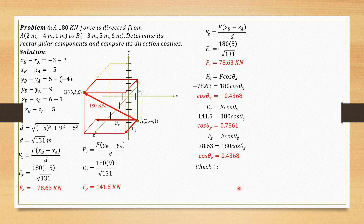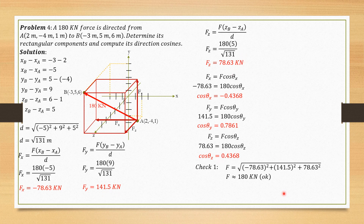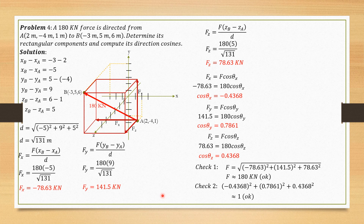To check our work using method 1: the square root of (-78.63)² + (141.5)² + (78.63)² is approximately equal to 180, so the computed components are correct. For method 2, we add the squares of the direction cosines, which should equal approximately 1. The result is indeed almost equal to 1, so that checks our solution.